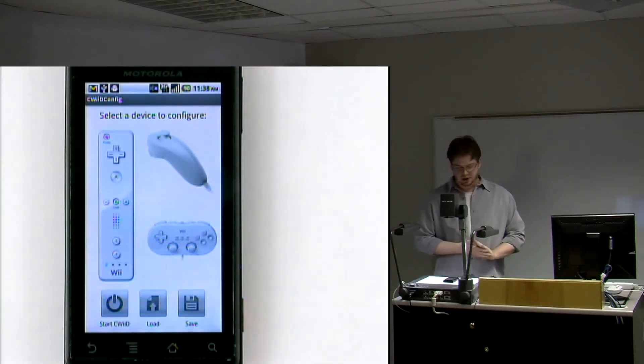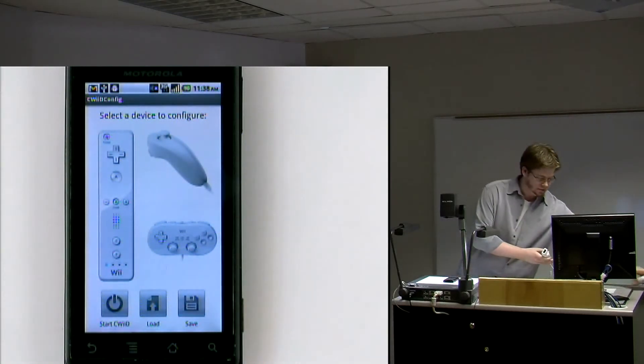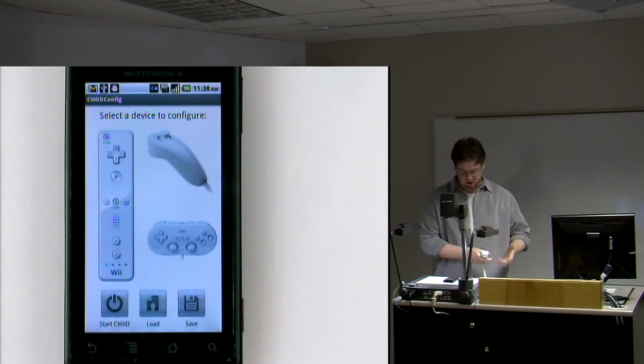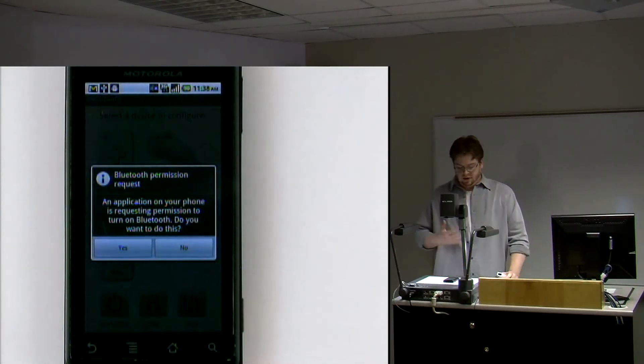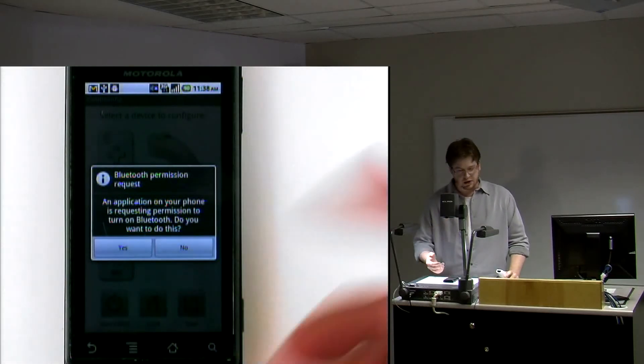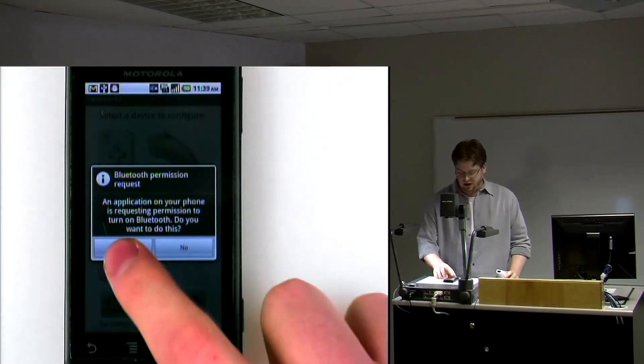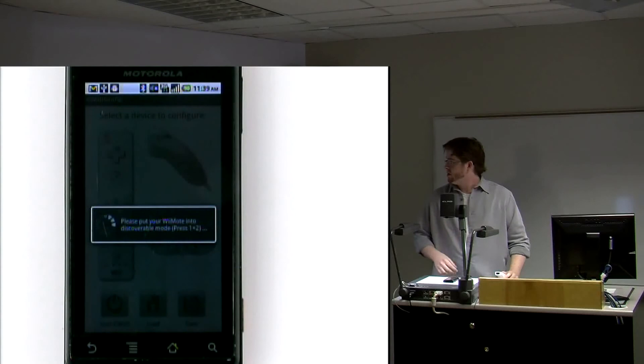And now I'll actually get to showing the connection. When you connect, it's a little bit intensive because you have to pair the device, but we try to make it as painless as possible. You just hit start. If you don't have Bluetooth activated already, it'll ask you if you want to activate it. If you say no, then it won't do anything. If you say yes, then it'll start up Bluetooth. It'll then tell you exactly what's going on. Please put your Wiimote into discoverable mode and press 1 and 2 at the same time. So I do that.